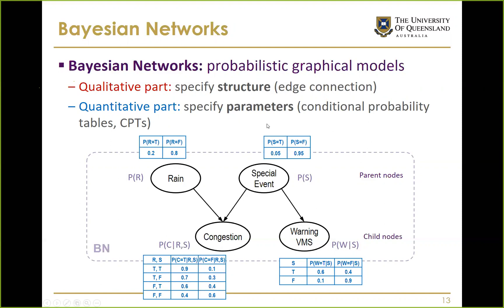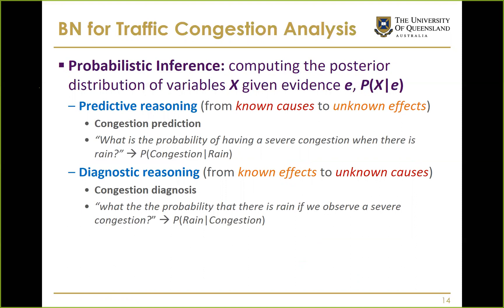Both structure and parameters can be learned using machine learning techniques. In this study, we use machine learning to learn parameters, but we specify structure using a combination of manual expert knowledge and statistical tests, rather than learning completely automatically from machine learning.